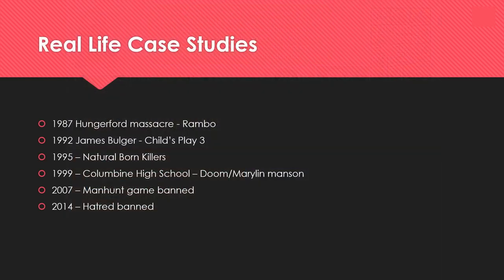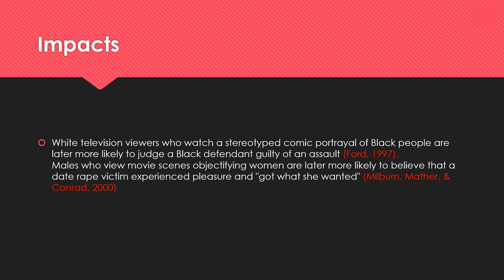A list of real case studies includes the Hungerford massacre with Rambo, James Bulger with Child's Play 3, the Natural Born Killers cases, and the Columbine shooting linked to Doom and Marilyn Manson's music. Since then, games like Manhunt and Hatred have been banned because violent video games are blamed for real-life violence.